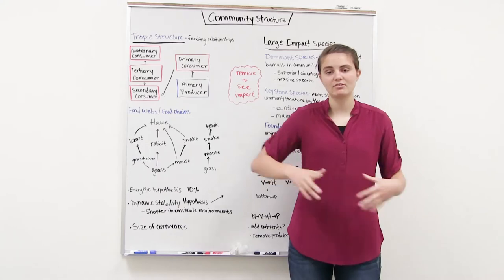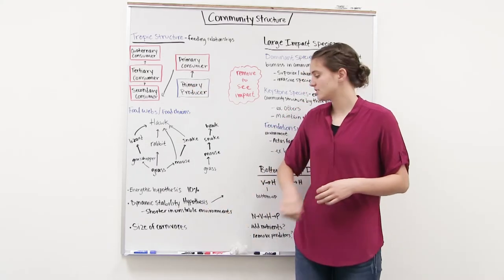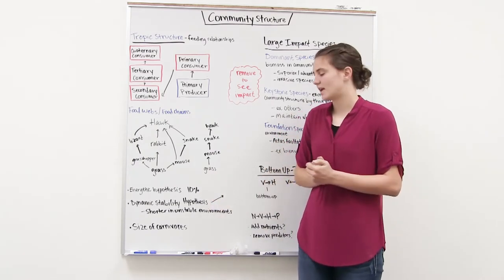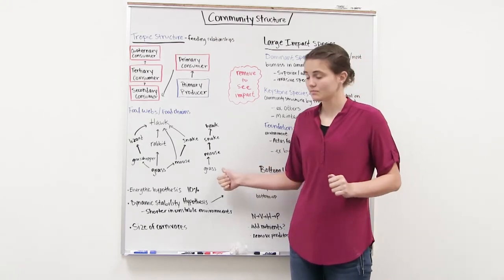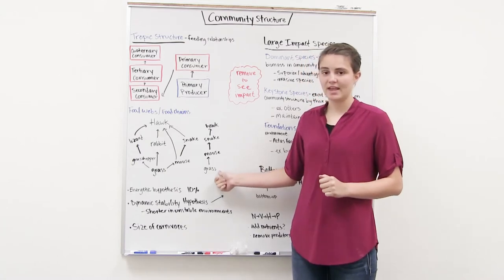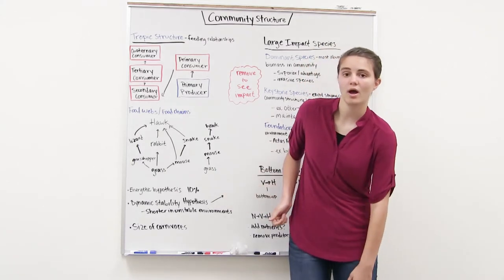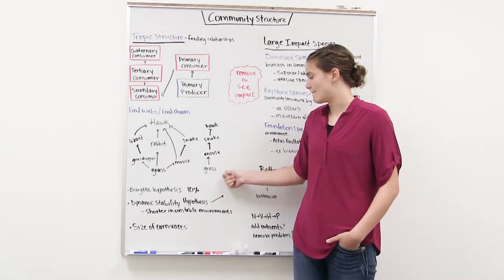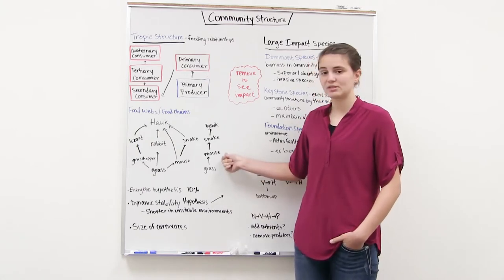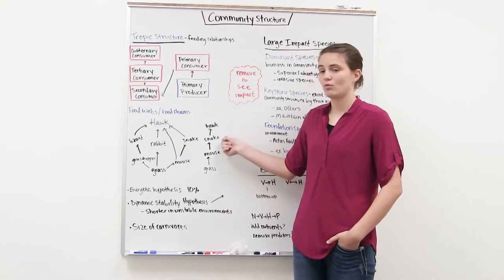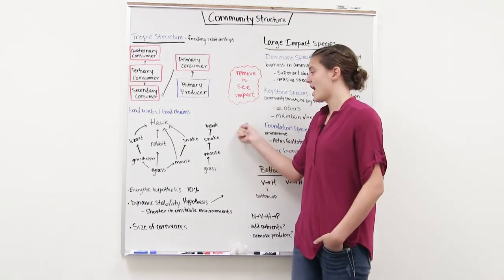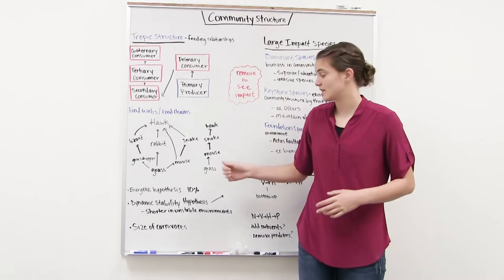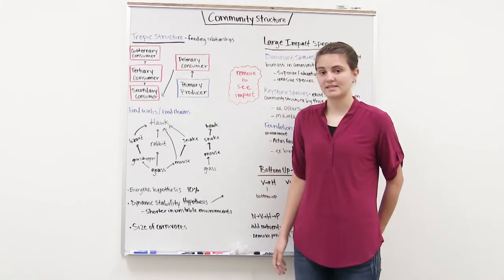Why don't we have really long food chains? There are three reasons. The first is the energetic hypothesis: as we increase each trophic level, only 10% of the energy or biomass is transferred. So if we have 100 kilograms of biomass from the grass, only 10 kilograms is transferred to the mouse, then only 1 kilogram to the snake, and only 0.1 kilograms to the hawk. We can't sustain really long chains because we'll eventually run out of the biomass needed to support them.